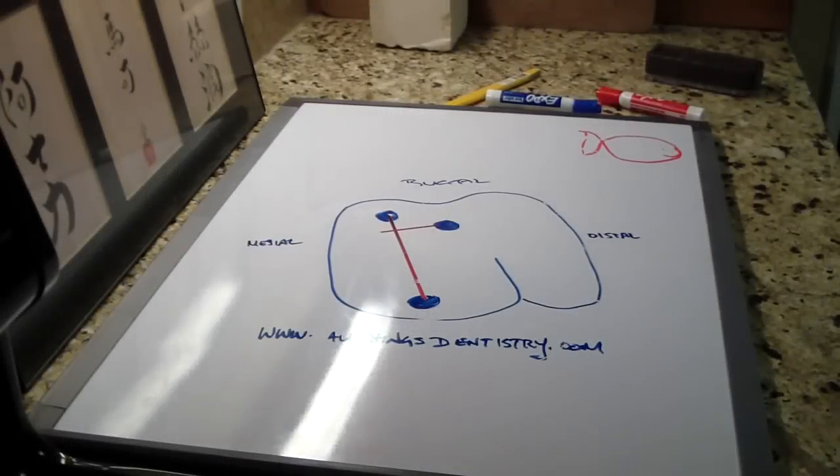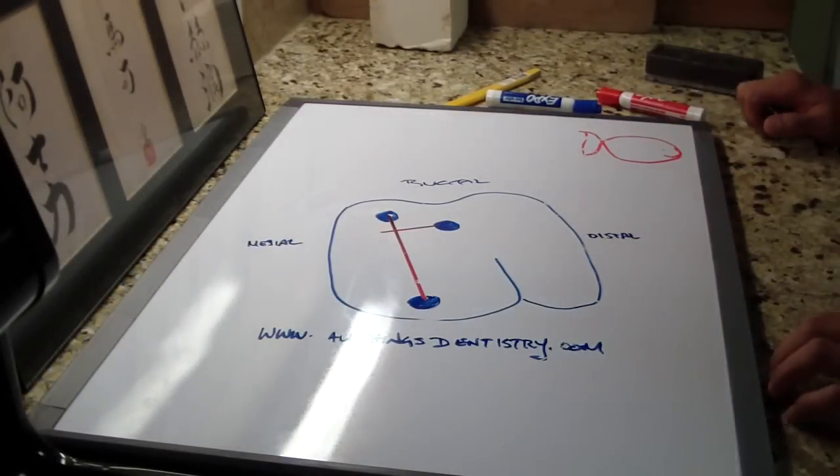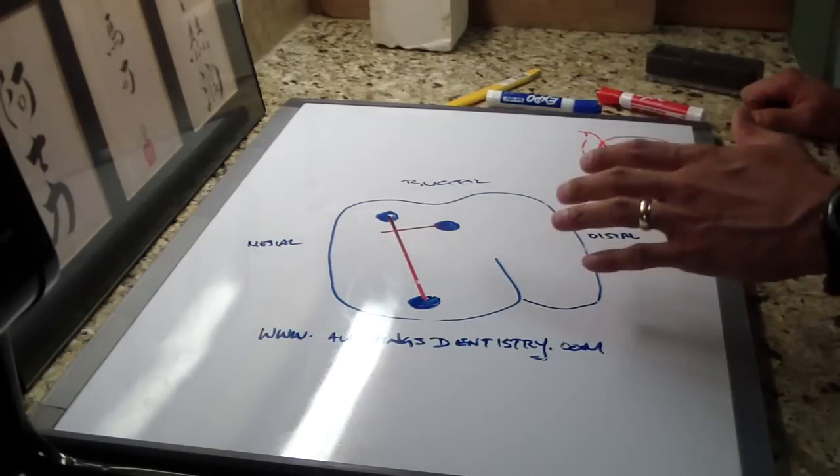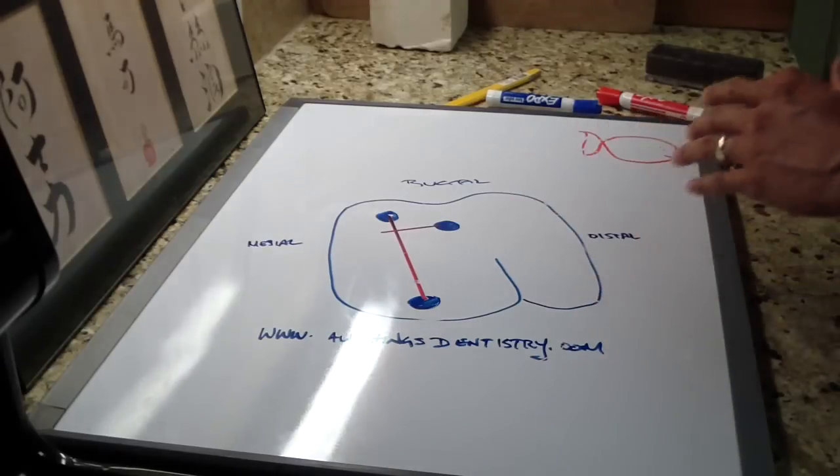Hey, welcome back. Ashley here at AllThingsZenistry.com talking about maxillary molar endodontic access, and specifically this drawing. We're going to talk about an easy way to look for the MB2 canal.